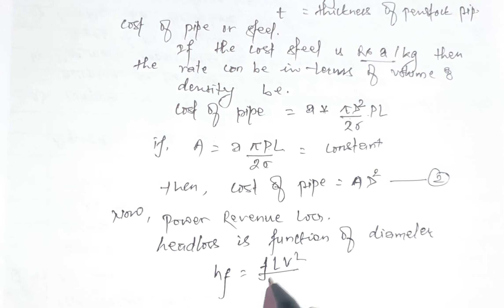We know that power cost equals efficiency times gamma times Q times h_f. Now substituting equation three into this, the power cost equals the expression involving 8·f·l·Q² divided by π²·g·d⁵.